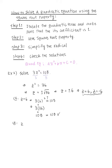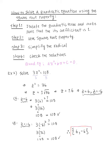Now let's check z equals negative 6. We get 3 times negative 6 squared. That squared is only attached to the negative 6, so we get 3 times positive 36, which gives us 108. It checks with the right-hand side. So our proposed solutions are actual solutions. Therefore, our solution set is {6, -6}.